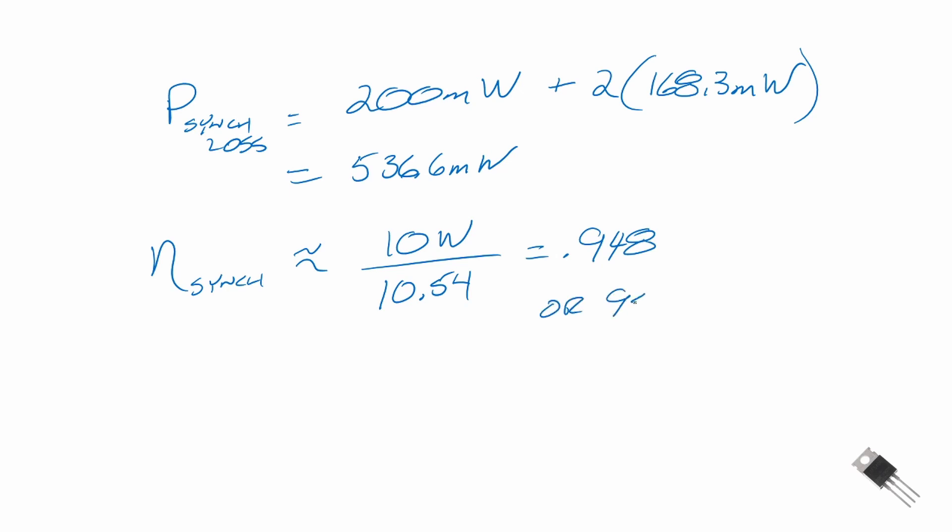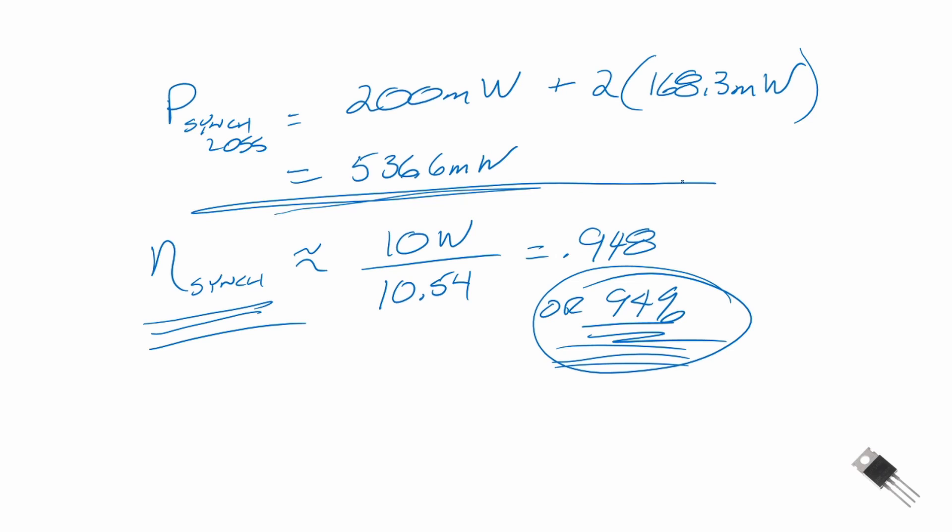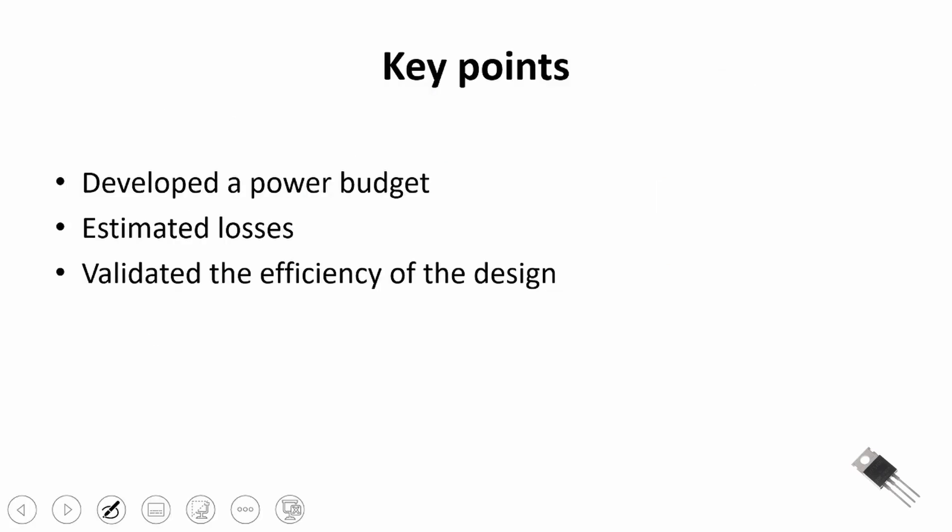Now what I did not factor into this was the gate driver control for the MOSFET, or if we used a sync for the MOSFETs, and you would have to factor that in. That would reduce our efficiency from 94 percent possibly down to 93 percent. And I think we had enough in our power budget to account for a controller as well. So that's how you do the analysis for estimating the efficiency of that buck converter.